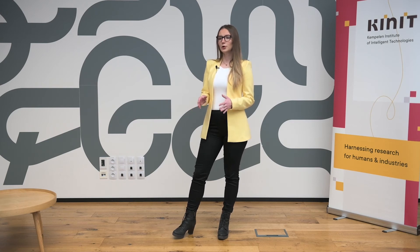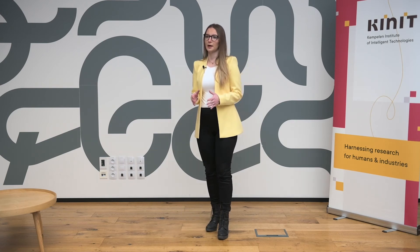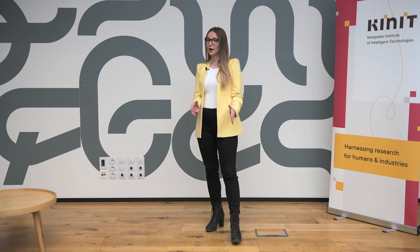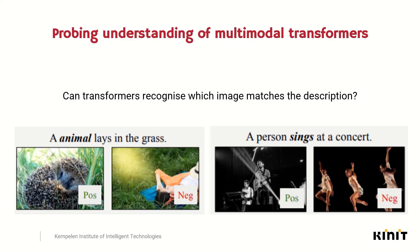A good model should combine information about how people stand, what they wear, and how the surrounding looks. To test this understanding, I followed one of the recent papers and tested whether multimodal transformers pre-trained on different datasets can notice a difference of one word in a caption and classify it as no longer matching.